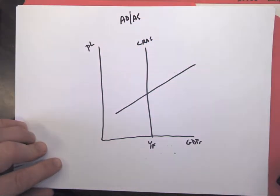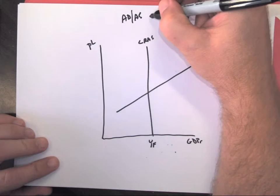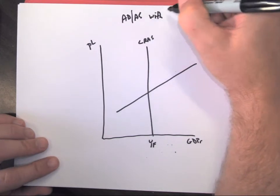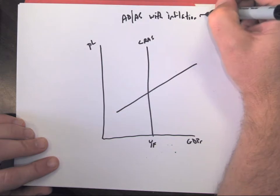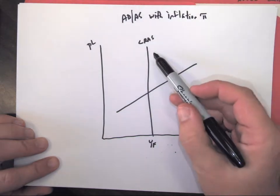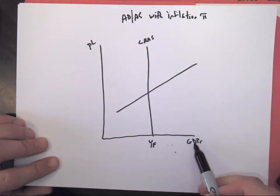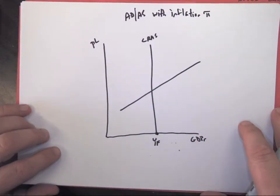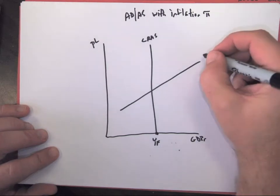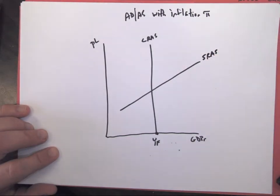We have our aggregate demand and aggregate supply model with inflation. We're going to draw our long run aggregate supply with real GDP, our full employment level of GDP that would be possible if everyone's working, and our price level. Our short run aggregate supply represents all of our businesses.